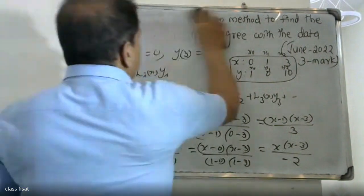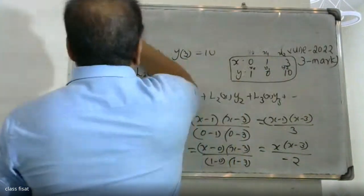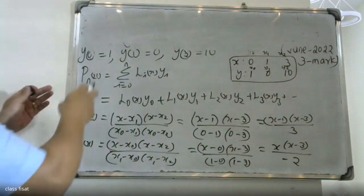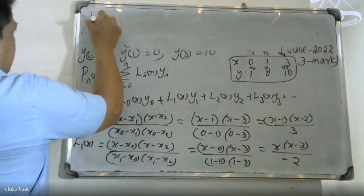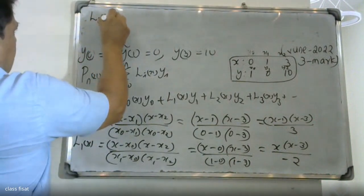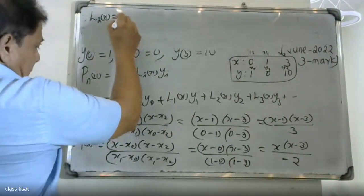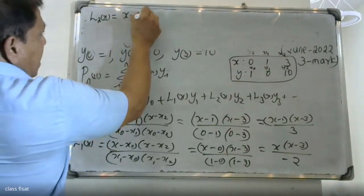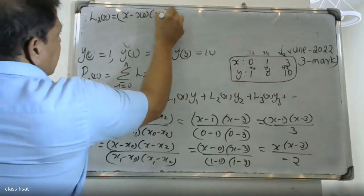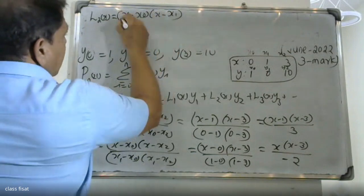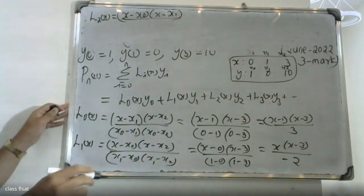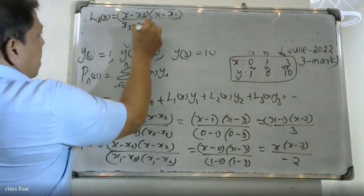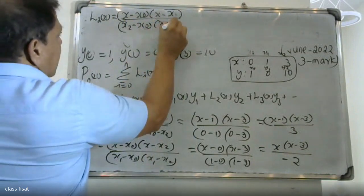For L2(x): the numerator is (x minus x0)(x minus x1) and the denominator is (x2 minus x0)(x2 minus x1). So L2(x) has numerator (x minus x0)(x minus x1) with denominator (x2 minus x0)(x2 minus x1).